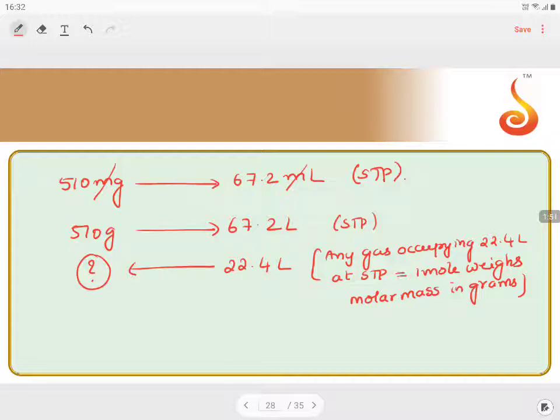So any gas occupying 22.4 liters at STP is equals to 1 mole, which weighs the mass equals to molar mass in grams. So the mass of the substance will become the molecular mass of the substance.